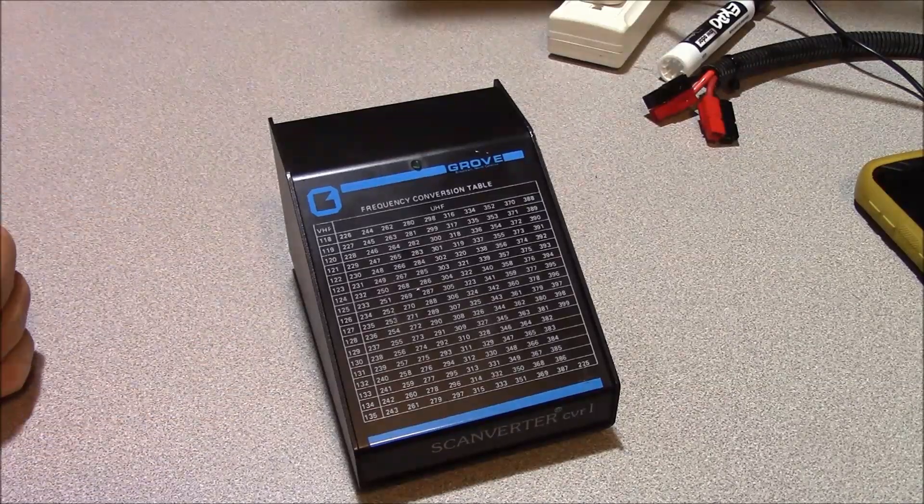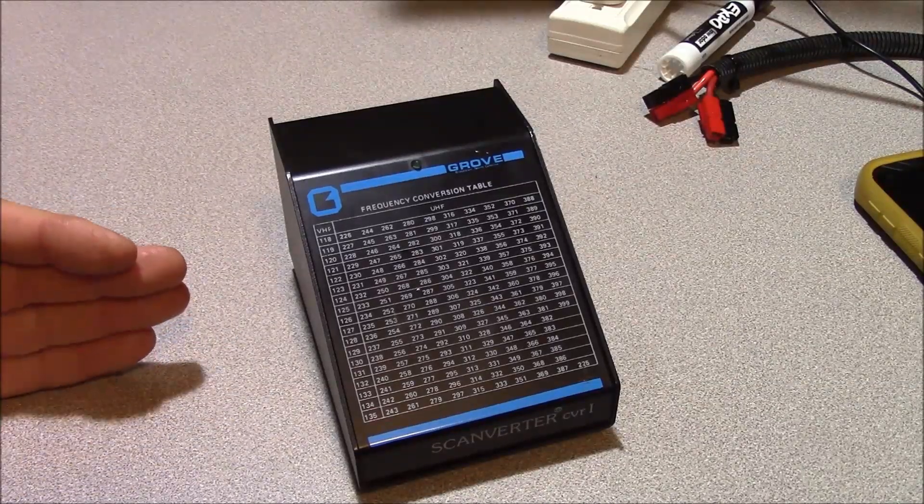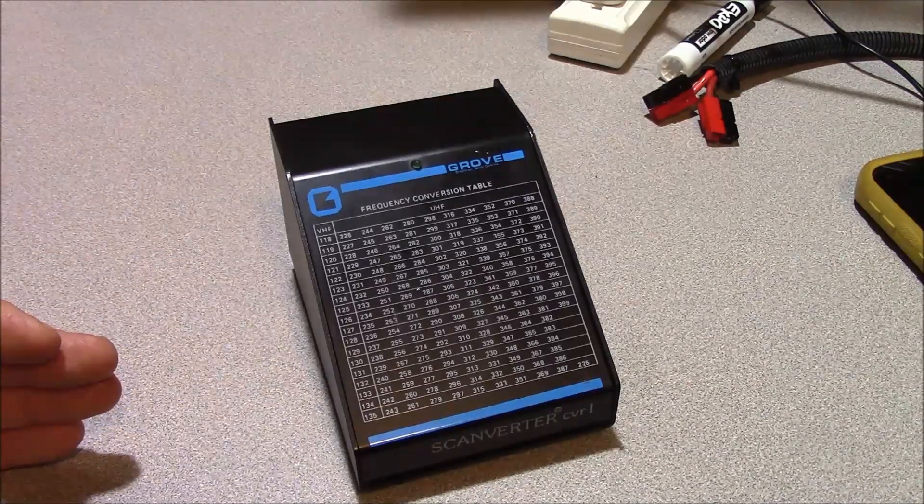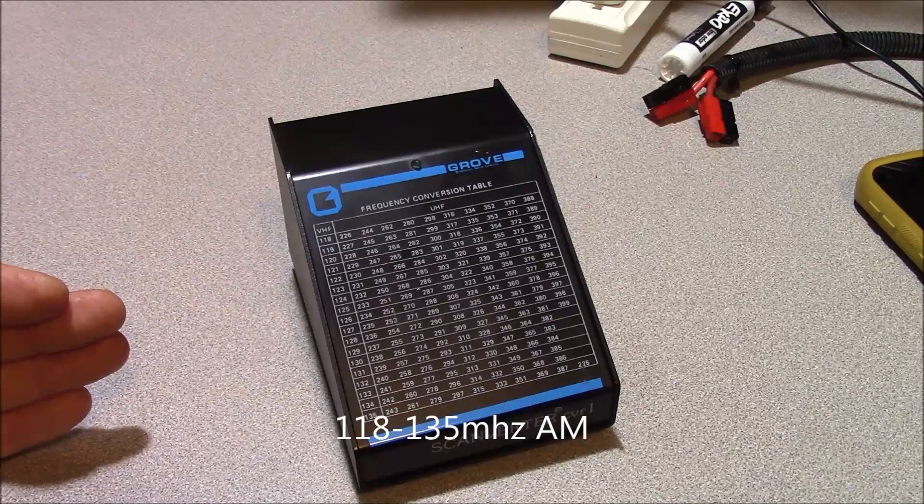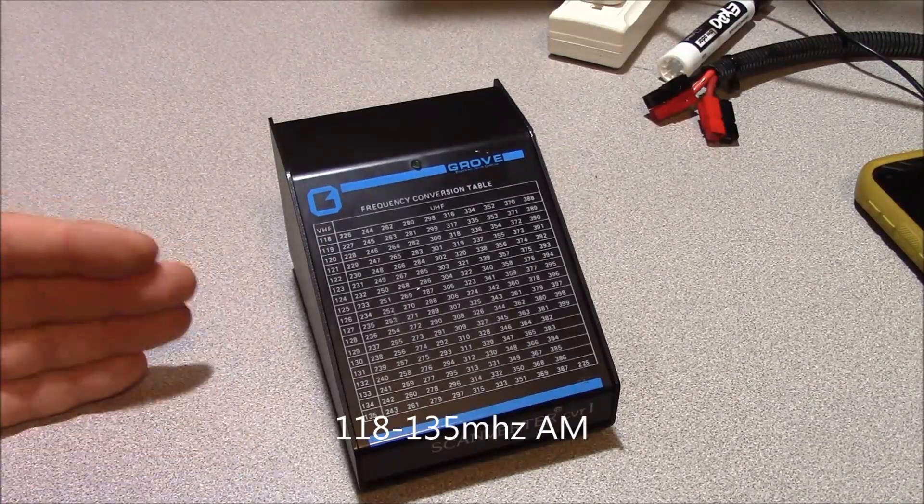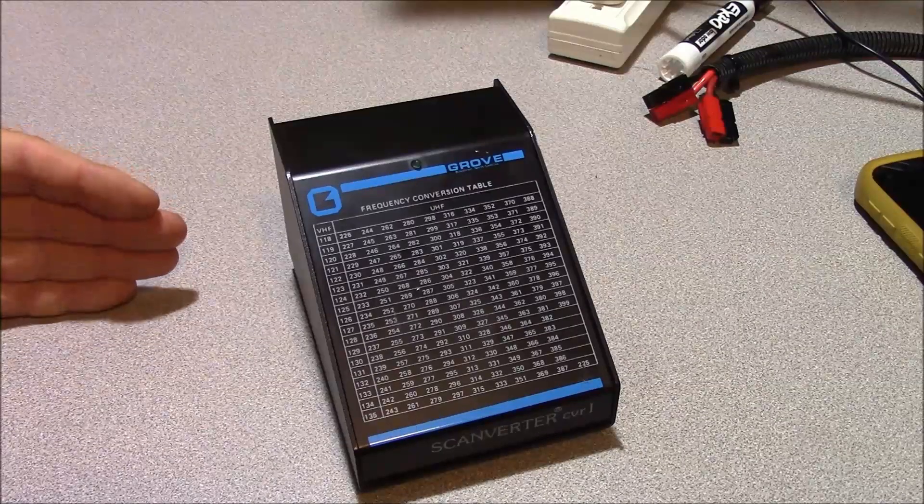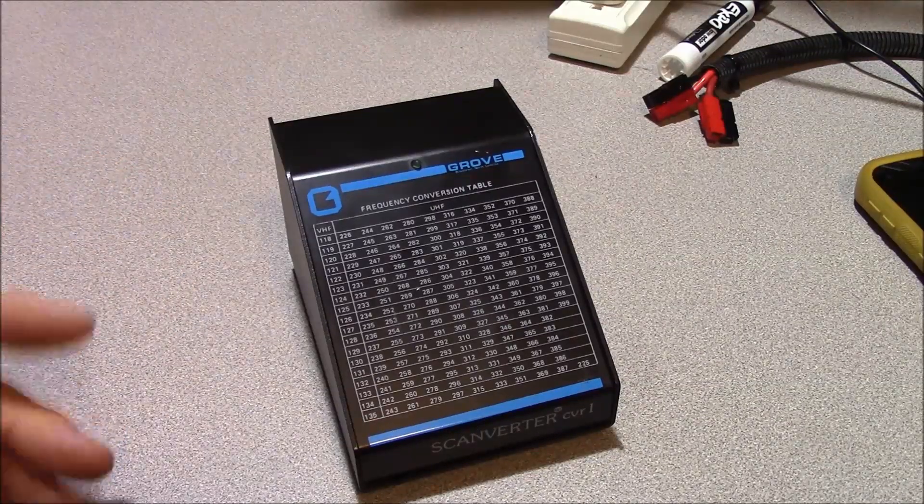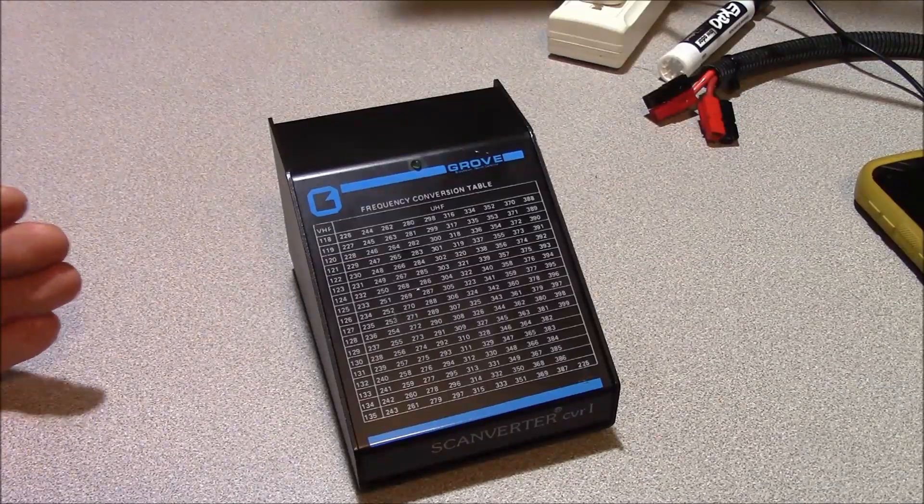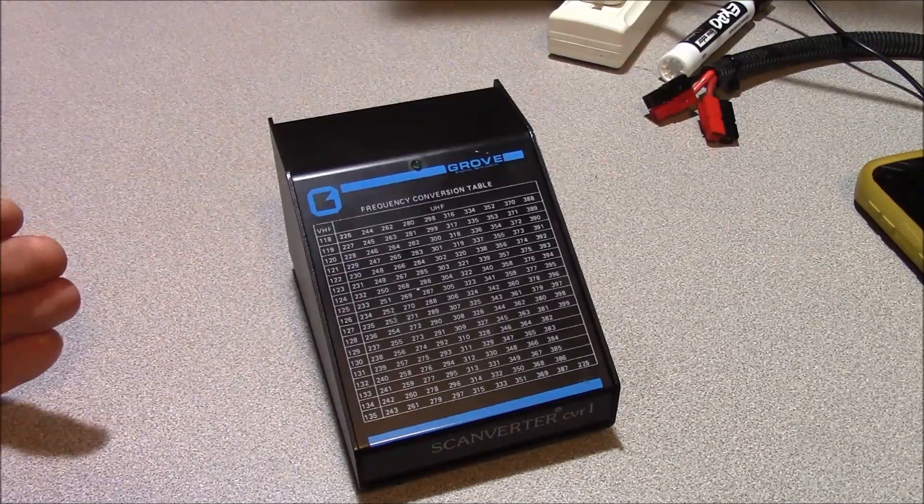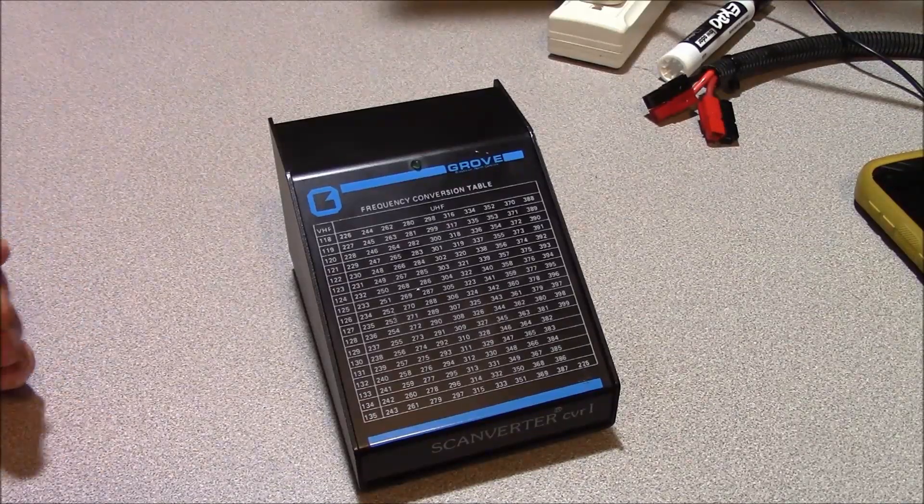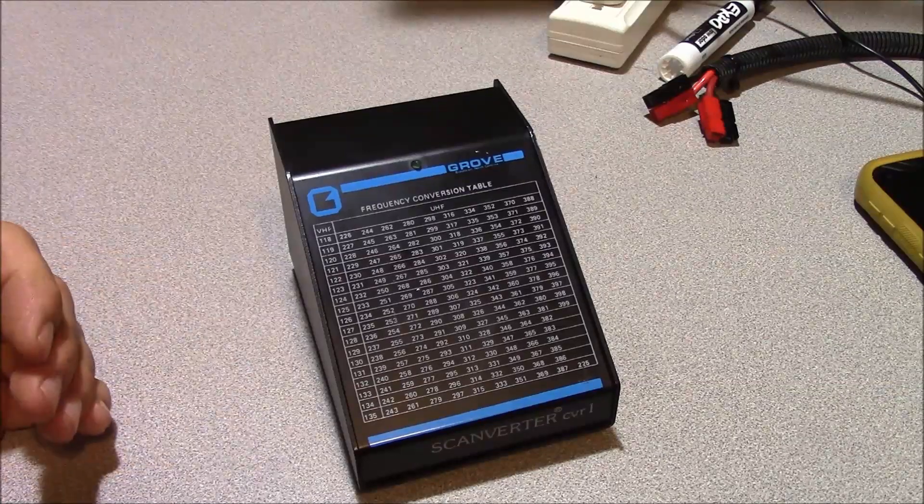Hence this device was envisioned. And this device acts as a receive converter that basically uses the existing Civil Aviation scanning receiver as an IF radio, and through the use of this device allows that scanning receiver receiving the Civil Aviation frequencies to pick up military aviation frequencies, which in and of itself is not an incredibly unique concept as it's been done in transverters and other technology before this device.